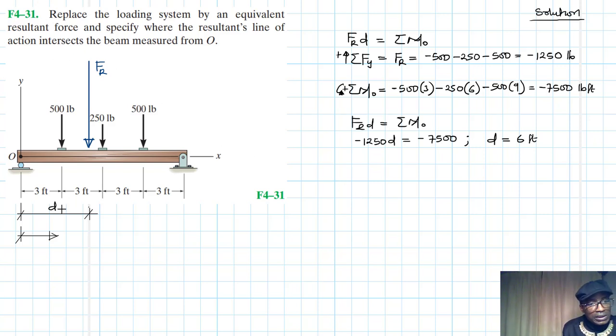So therefore this d is equal to 6 feet, and this FRR is just equal to 1250 pounds.